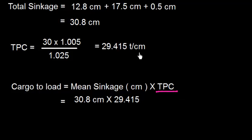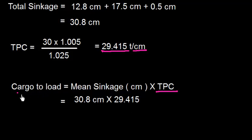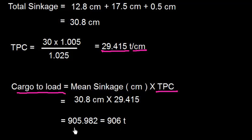With a total sinkage of 30.8cm and TPC for dock water = 30 × (1.005 / 1.025), the total cargo to load = 30.8 × TPC_dw ≈ 905.98 tonnes, or approximately 906 tonnes.